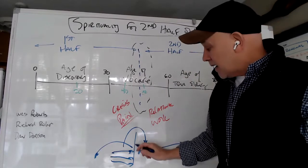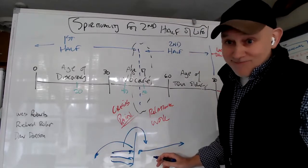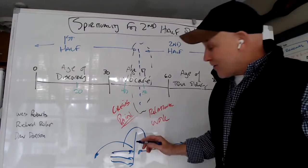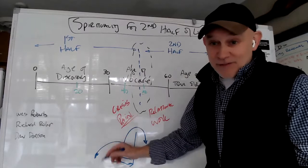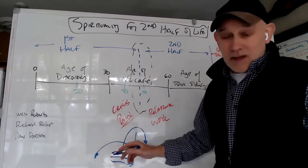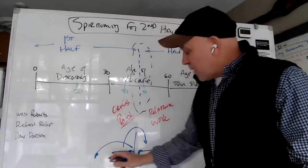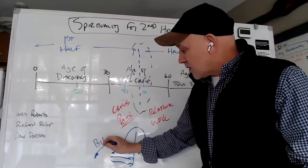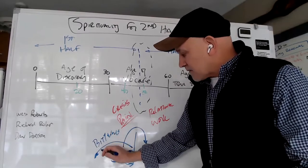Richard Rohr says the church is really designed for first half of life spirituality and we give first half of life answers for second half of life questions. There are second half of life questions and they're not answered by first half of life answers completely the way they used to. We can go back there, and this can create actual bitterness in people and frustration.